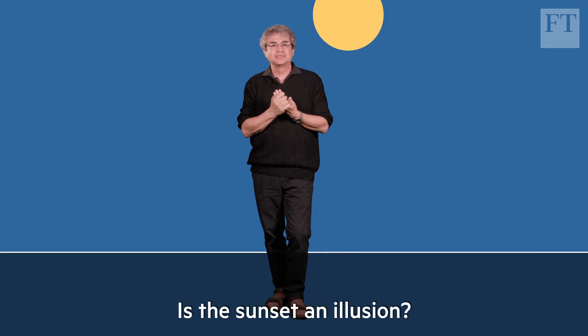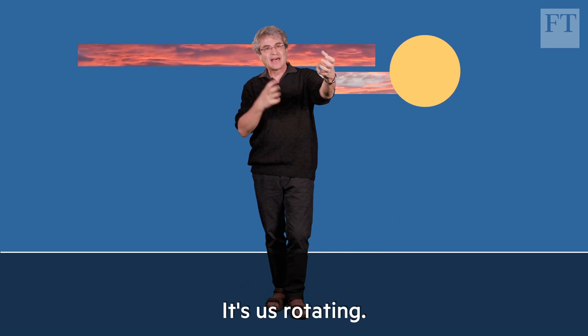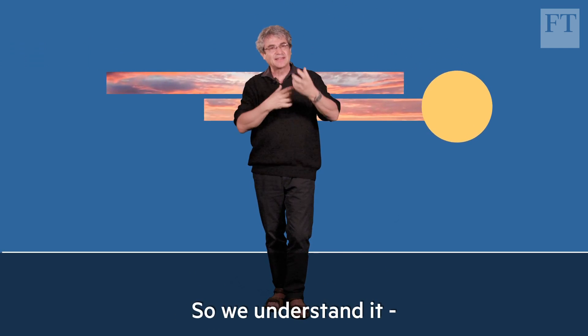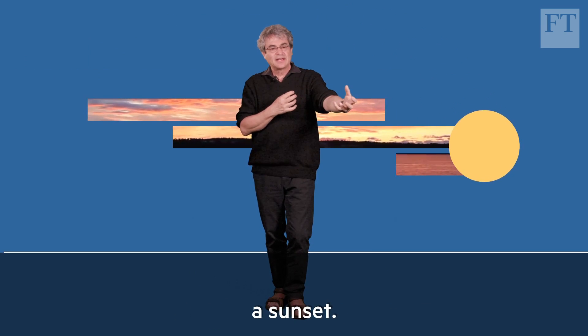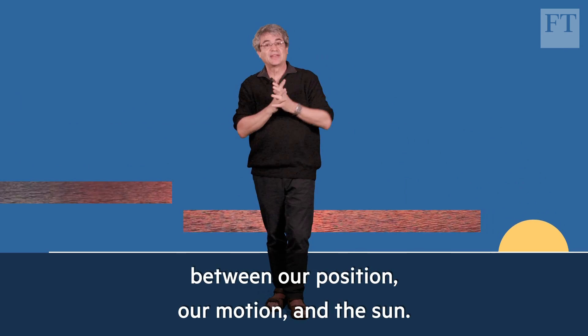Is the sunset an illusion? No, because the sun goes down. But it's not the sun doing something—it's us rotating. So we understand it, a sunset, but we understand it as a complicated relation between our position, our motion, and the sun.